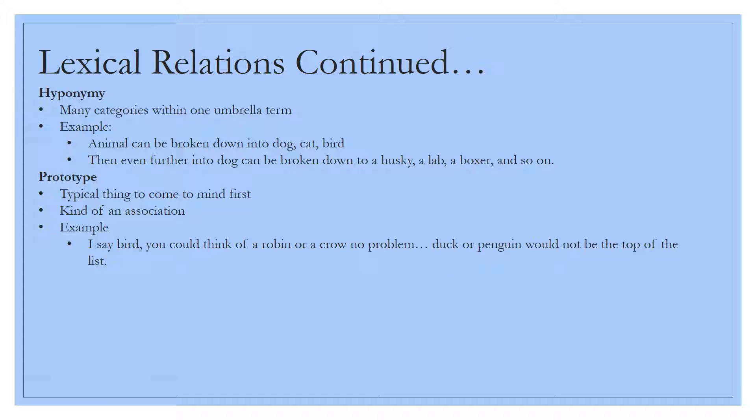Another subcategory of lexical relations is hyponymy, which is many categories within one umbrella term. So an animal can be broken down into multiple different categories, such as cat, dog, and bird. And then those can be broken even further down. If you take dog as an example, into husky, lab, boxer, and so on. You talk about cats, you can have a Persian, a Siamese, and the list goes on. It's an umbrella term.